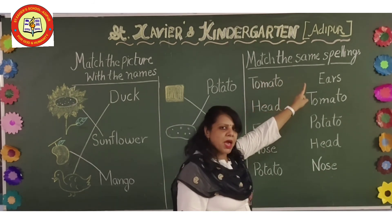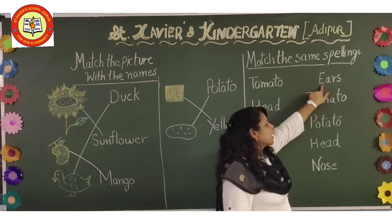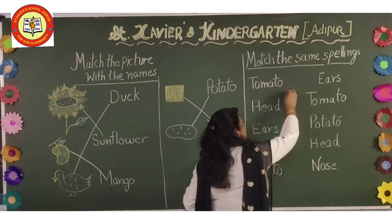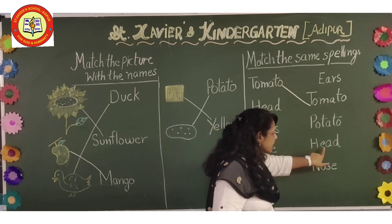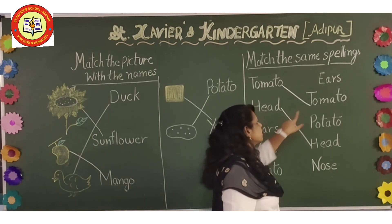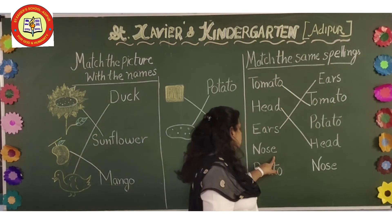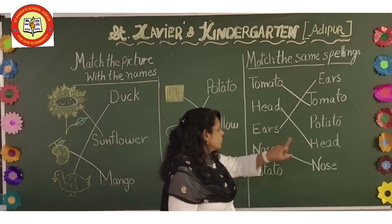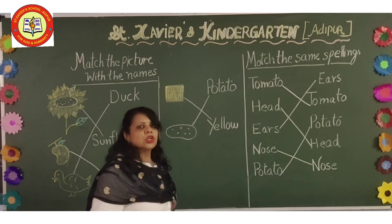Then second activity: match the same spelling. T-O-M-A-T-O tomato — this is the spelling of tomato, so we have to match the same spelling. H-E-A-D head, then H-E-A-D head, so we have to match it here. Then E-A-R-S ears, E-A-R-S ears, match it here. N-O-S-E nose, N-O-S-E nose, match here. P-O-T-A-T-O potato, P-O-T-A-T-O potato, match it here. Like this, you have to do in your notebook.